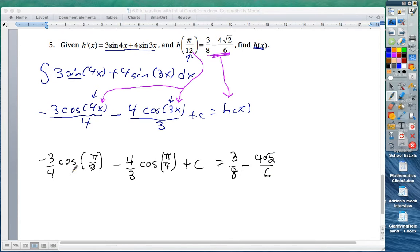At this case, what's the special angle cosine of π over 3? Cosine of π over 3 is a half, okay? So now, you have negative 3 quarters times a half minus 4 thirds. Cosine of π over 4 is? Root 2 over 2. Root 2 over 2. And then, plus c, equals 3 over 8 minus 4 root 2 over 6.